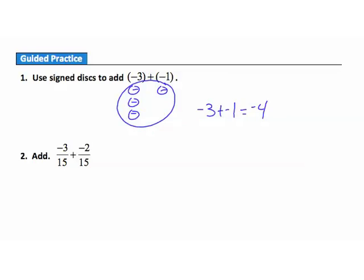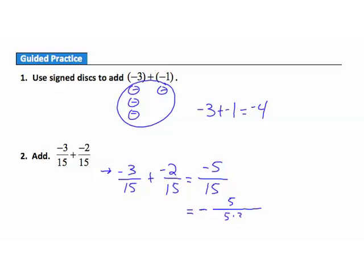Question 2: we're adding fractions that have a common denominator, so we don't need to find one. When we add fractions the denominator stays the same, so we focus on the numerators: negative 3 plus negative 2 is negative 5, giving negative 5 fifteenths. Now we can simplify — negative 5 fifteenths: in the numerator I have 5, in the denominator 15, which is 5 times 3. Dividing out the common factor of 5 leaves 1 over 3, so the answer is negative 1 third.